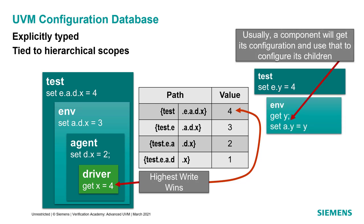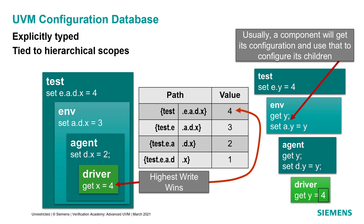Usually in UVM, the first thing each component does in its build phase is get configuration from the configuration database — often a simple integer, but frequently a configuration object containing all the information the component needs. The environment gets the value of y from the config database and uses it to set y inside the agent. The agent similarly gets y and uses it to set the driver's value. This allows the test to pass a value to the environment, which passes it to the agent, which passes it to the driver.